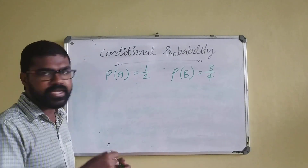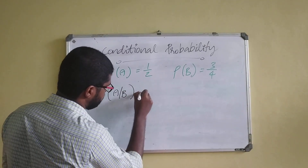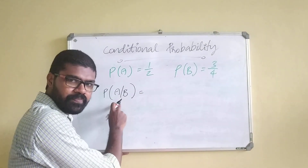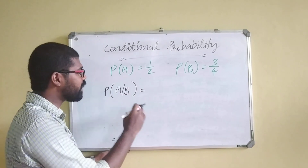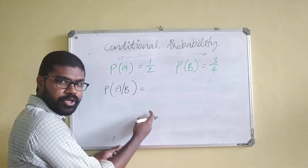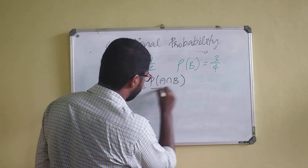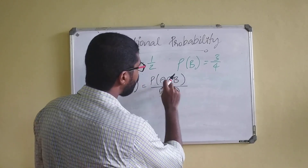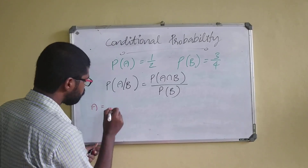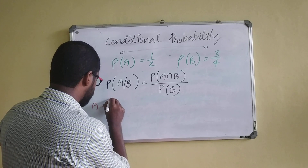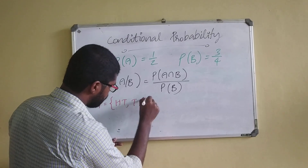Now let's find the conditional probability, that is P(A|B) — the probability of A given that event B has already occurred. By definition, P(A|B) equals probability of A intersection B divided by probability of B. So what is A intersection B? Event A is exactly one head: {HT, TH}. Event B is at least one head: {HH, HT, TH}.